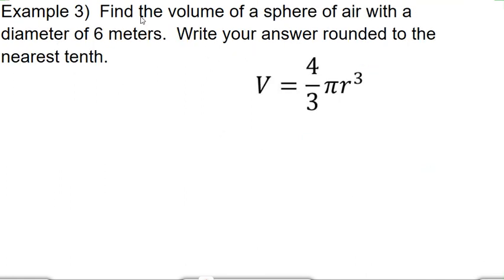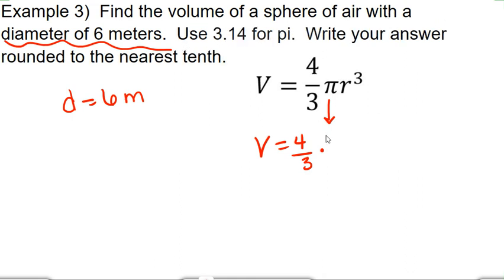Alright, example three. Let's do another one. This time we don't have a picture. So it says, find the volume of a sphere of air with a diameter of 6 meters. Write your answer rounded to the nearest tenth. Alright, so you could draw one if you want, or you can just label what you know. They tell us that diameter equals 6 meters. So, of course, in order to solve here, volume equals 4 thirds times pi. And it doesn't tell us what to use for pi, so I'm going to use 3.14. So for pi, I'm going to plug in my 3.14 times radius cubed. And the radius, we don't know, so we first need to get that. We know that diameter is 6, so radius is half.